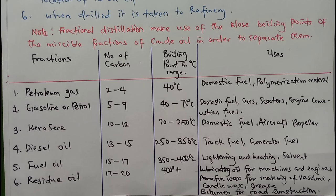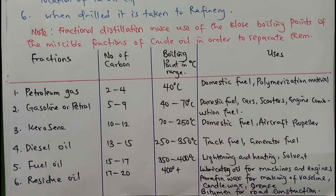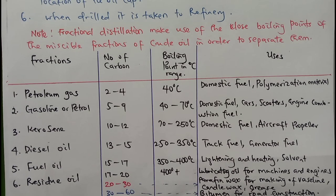Bitumen is the heaviest residue fraction, with carbon numbers above 30, and it is normally used for road construction.